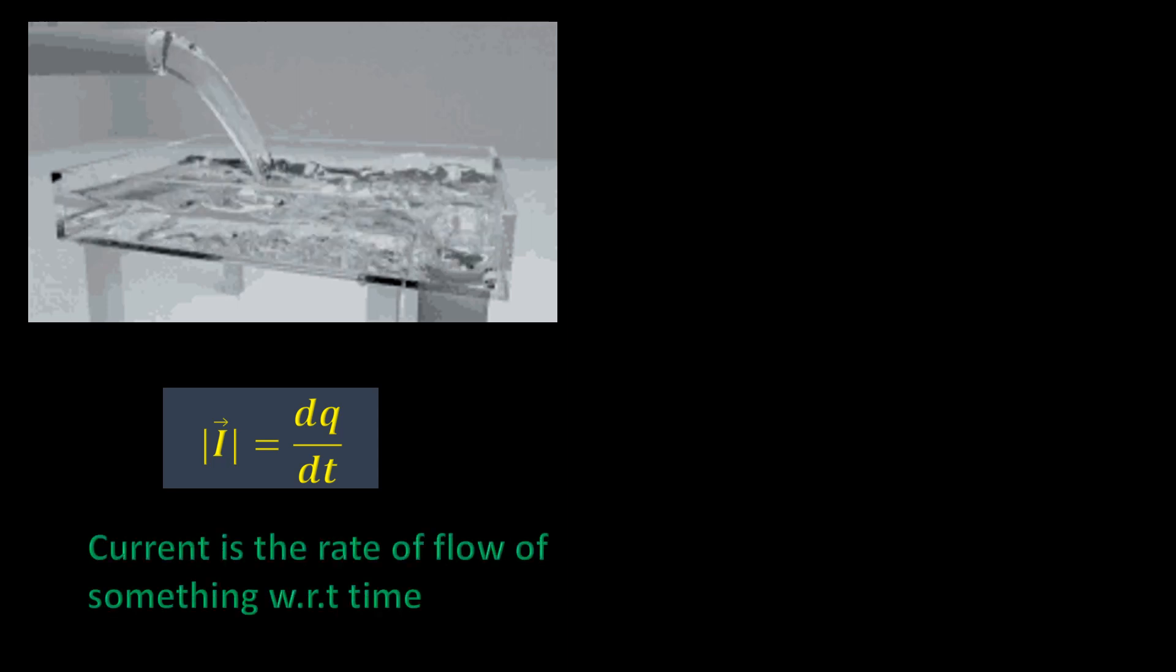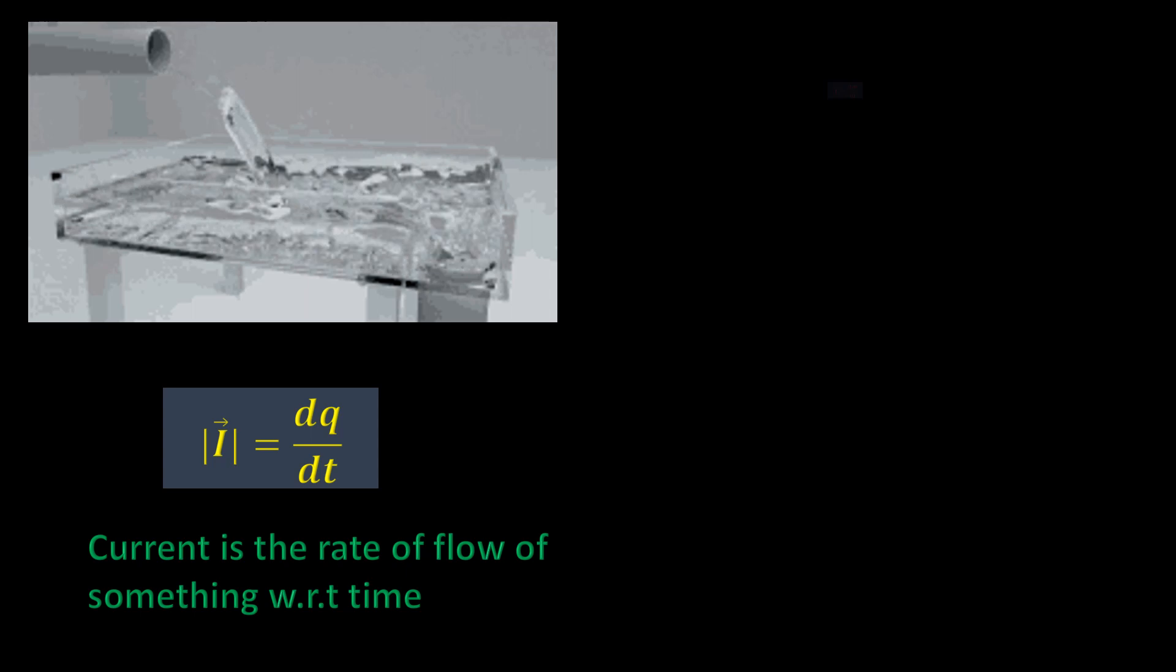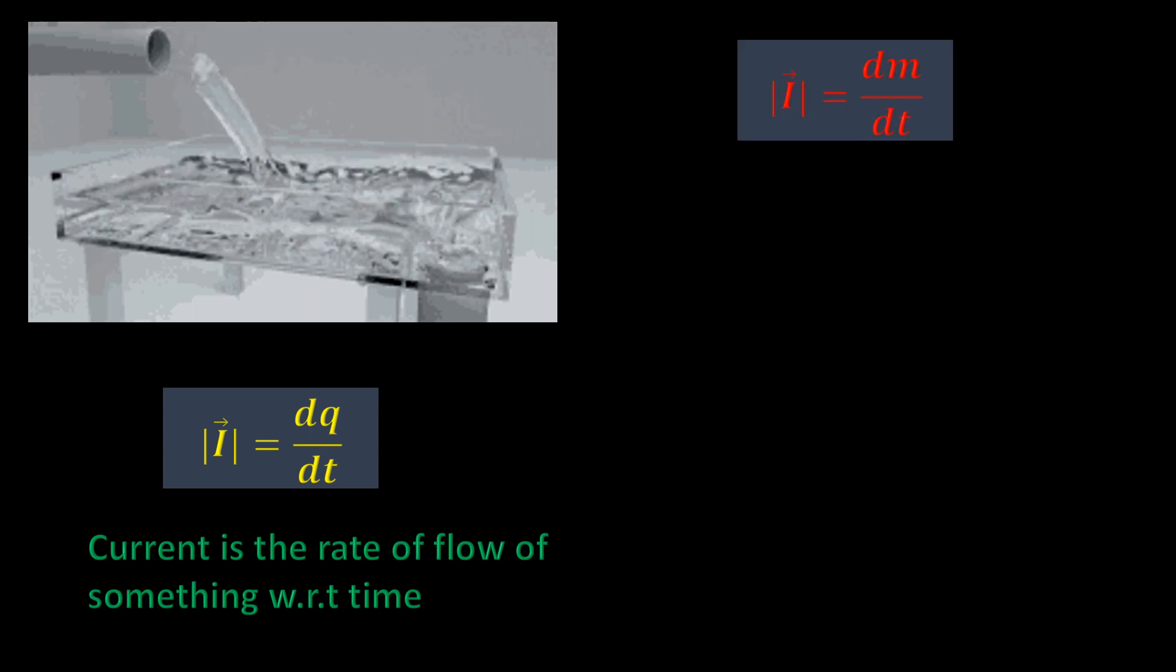So in general, current is the rate of flow of something with time. In the same way, we can define mass current as the rate of flow of mass with respect to time, and write it as dm/dt.